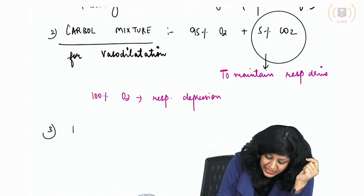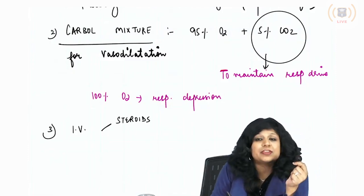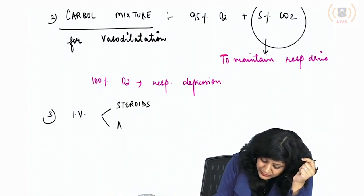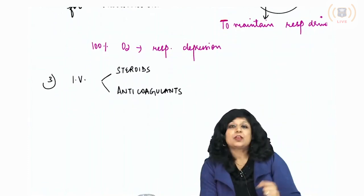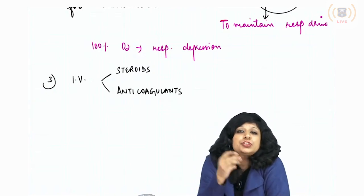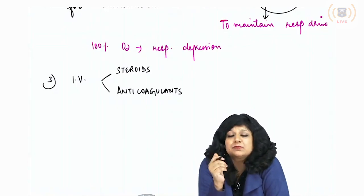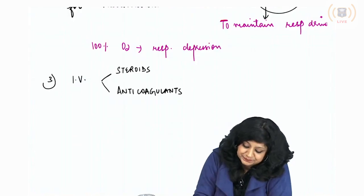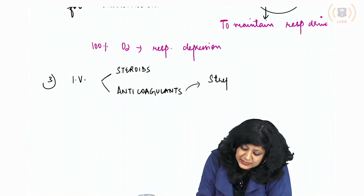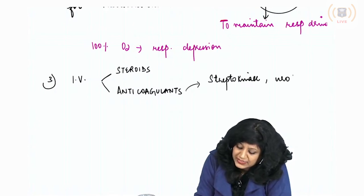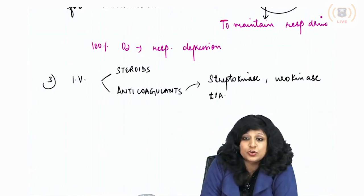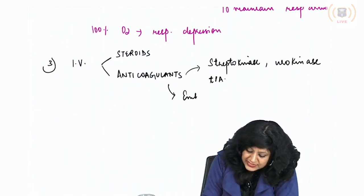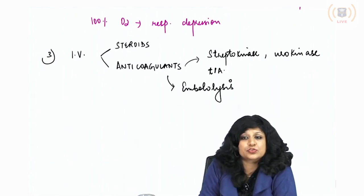Number three, IV steroids are given because of inflammation and exudate collection. We also give anticoagulants since the main reason for arteriolar occlusion is thrombosis and embolism. We can give streptokinase, urokinase, tissue plasminogen activator (TPA), or perform embolysis. All of this is systemic treatment.